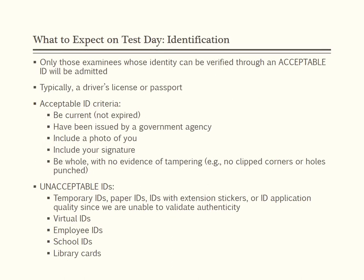Only examinees whose identity can be verified through qualifying forms of ID will be admitted. Typically, a driver's license or passport will meet the acceptable criteria. If you do not provide proper identification, you will be considered a no-show, will not receive a refund, and the attempt will count toward your testing limits. You will be asked to duplicate your signature on test day. If your ID has the word 'temporary' printed on it, you must contact AAMC Services for instructions prior to the Silver Zone registration deadline. If your ID will expire before your scheduled test date, you are responsible for obtaining an updated ID.